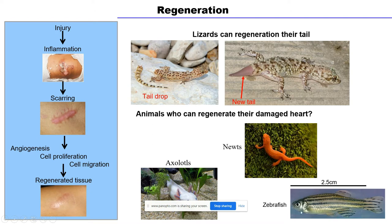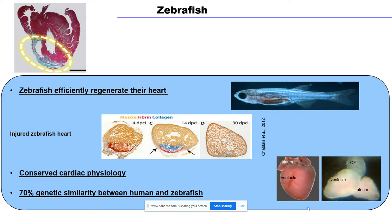People use zebrafish as a model organism to understand the regeneration processes of many organs including the heart, because the idea is that if we know how these animals can regenerate their heart, we can use that knowledge to invent new strategies to improve heart regeneration in humans. At Agharkar Research Institute, we also use zebrafish as a model organism to understand how they regenerate their heart. We use zebrafish not only because they can regenerate their heart, but also because their cardiac physiology is quite similar to that of humans.